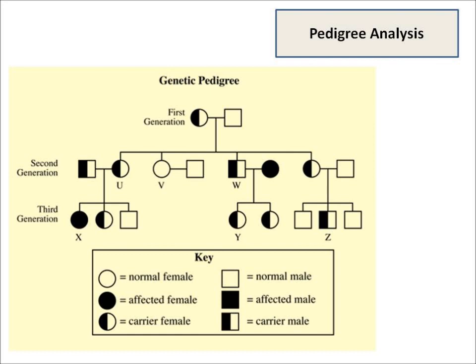A pedigree analysis shows a family tree and it shows who is healthy, who is a carrier, and who has the genetic condition. I can see that in the first generation the husband was healthy but the wife was a carrier. They had four children: one daughter was healthy, two daughters were carriers, and one son was a carrier. That's a pedigree analysis.